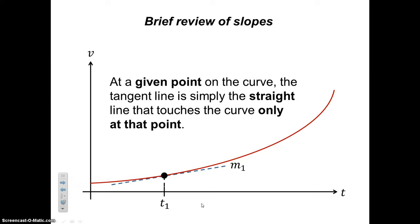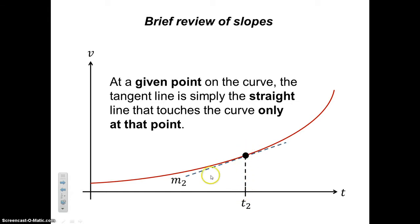Let's see the same thing done at a later point. We trace up to the curve, mark our point on the curve, draw the tangent line — the straight line which only hits the curve at this point. Here's the tangent and here's its slope. That slope equals the slope of the curve at this particular point.